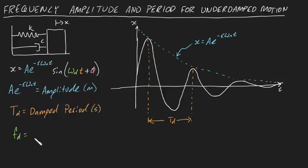f_d, on the other hand, is the damped frequency of the system and describes the number of complete revolutions of the block per unit time, in cycles per second or hertz.